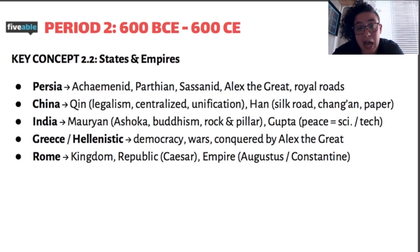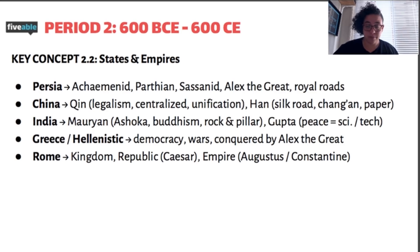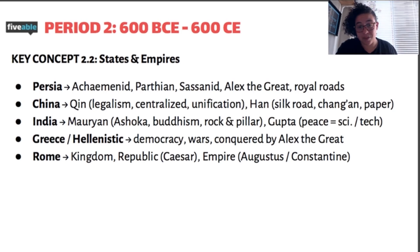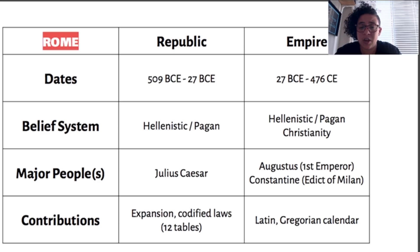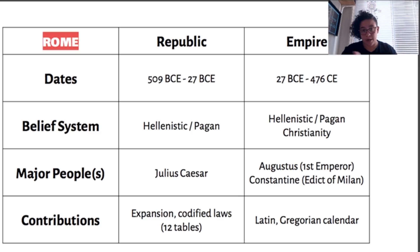Rome comes up a lot in this time period. There are actually three phases of Rome: the Kingdom, the Republic, and the Empire. Most of what you'll read about in AP World is the Empire, with some focus on the Republic. The Republic ends with the death of Caesar; the Empire begins with the rise of Augustus. The Republic was Hellenistic, heavily influenced by Greece, and mostly pagan in belief. Christianity emerged during the Empire, and Constantine issued the Edict of Milan in 313, making Christianity legal in the Roman Empire, after which it became the dominant religion.